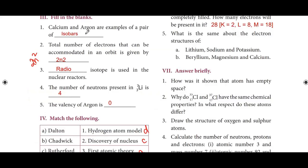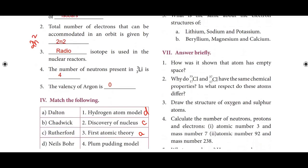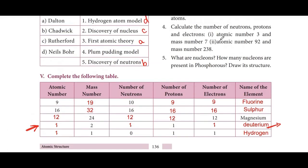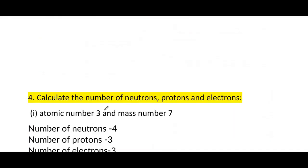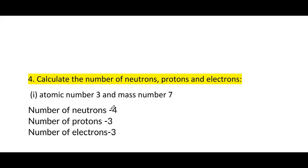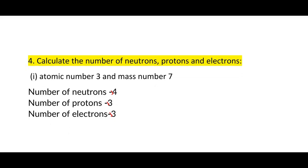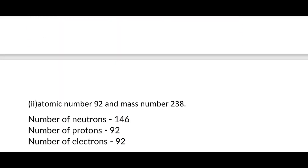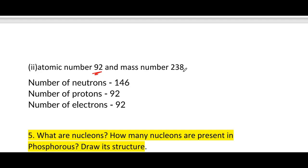Calculate the number of neutrons, protons and electrons. First: atomic number 3, mass number 7 — number of neutrons is 4, number of protons is 3, number of electrons is 3. Second: atomic number 92, mass number 238 — number of neutrons is 146, number of protons is 92, and number of electrons is 92.